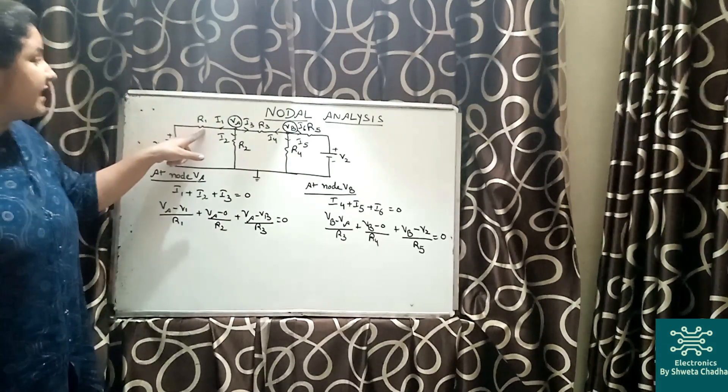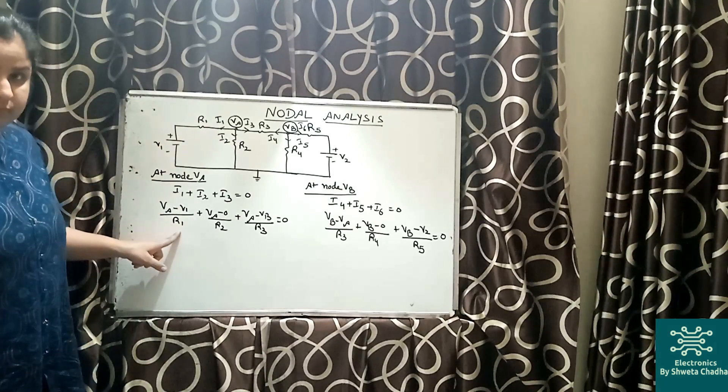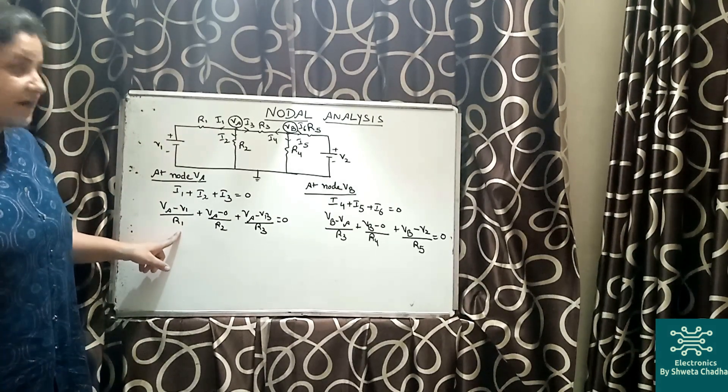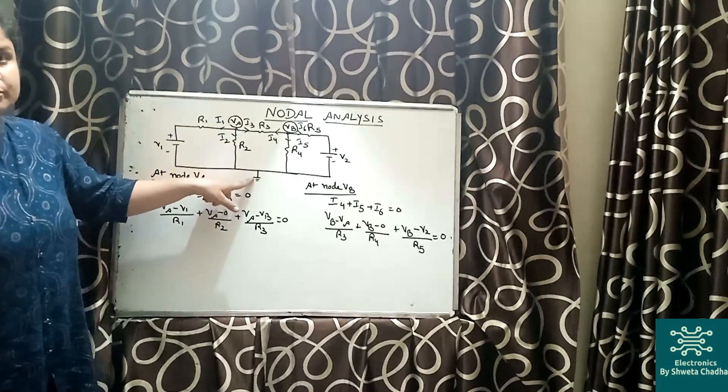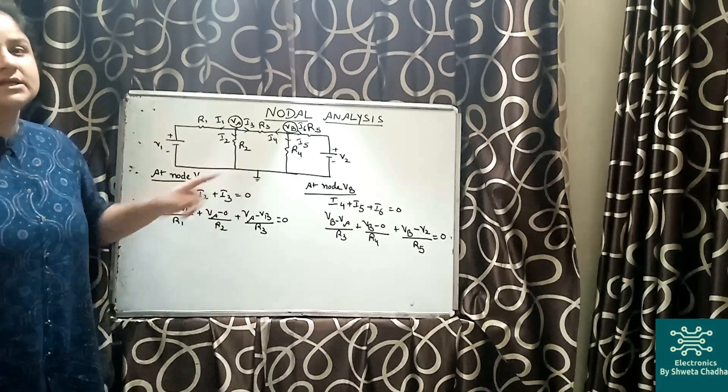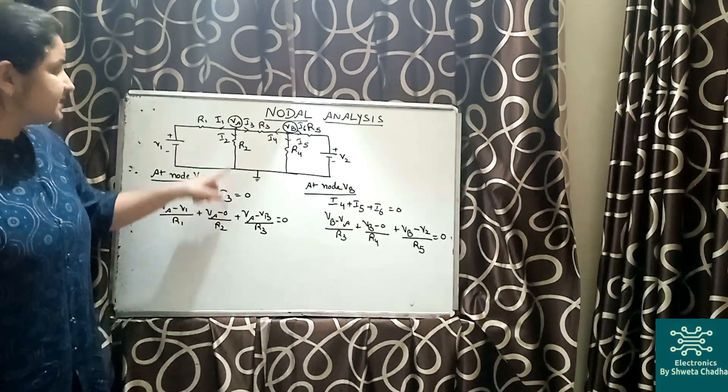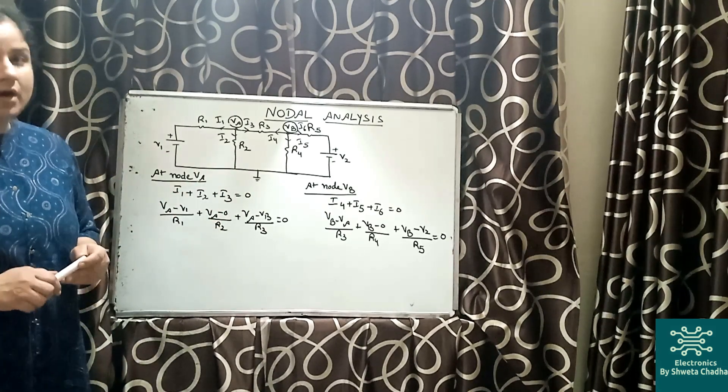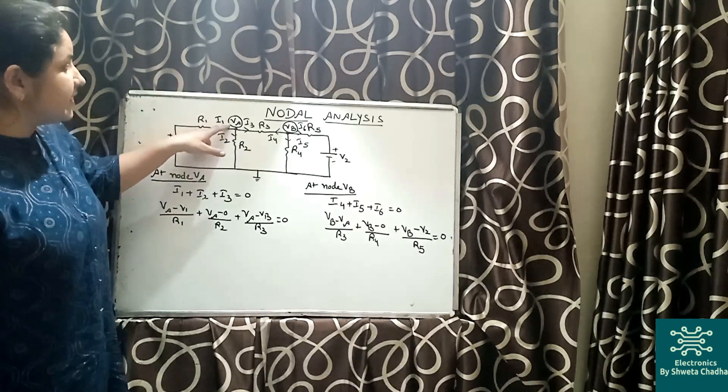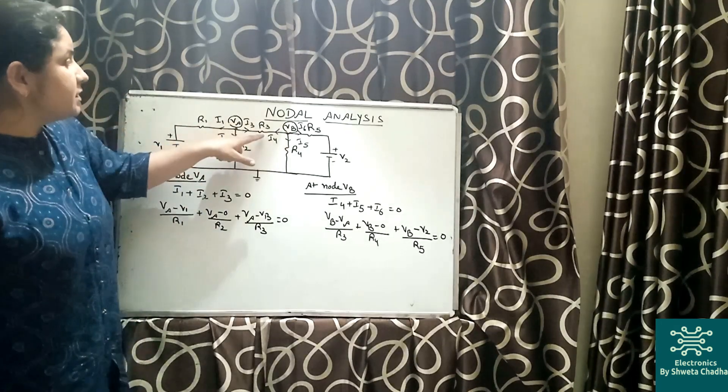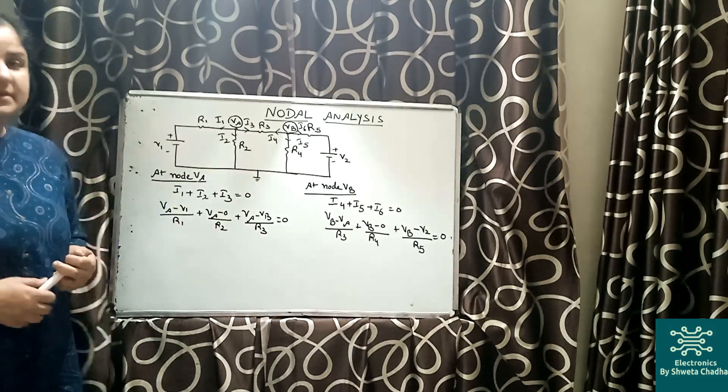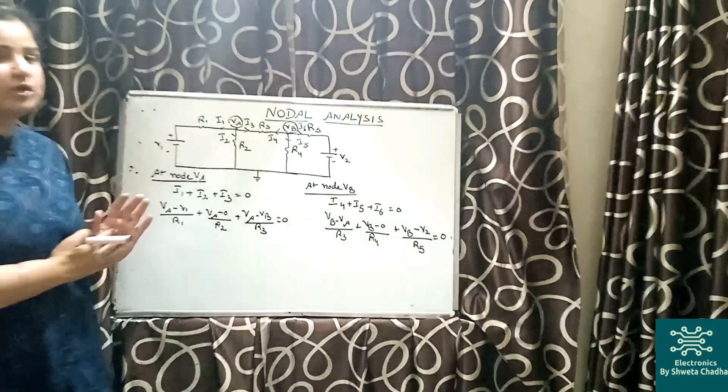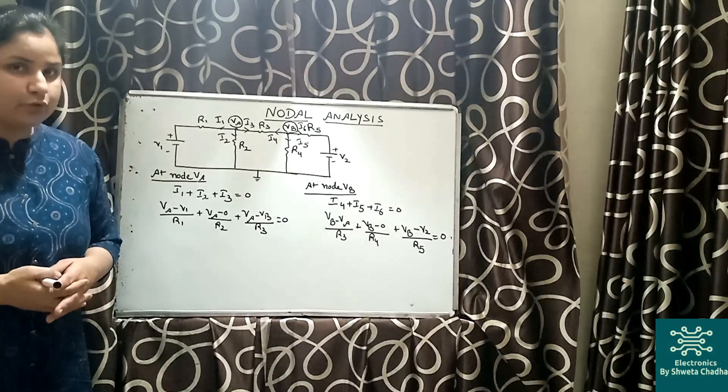So the potential difference of this branch containing current i1 is VA minus V1 divided by R1. Similarly, the value for i2 is VA minus zero (because the potential of ground is zero), VA minus zero upon R2. Whereas the third current i3 will be VA minus VB divided by R3, that is equal to zero.